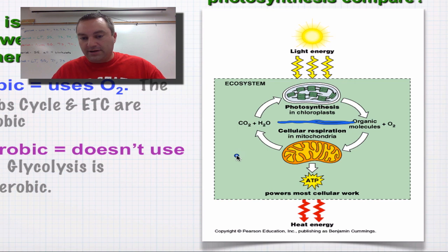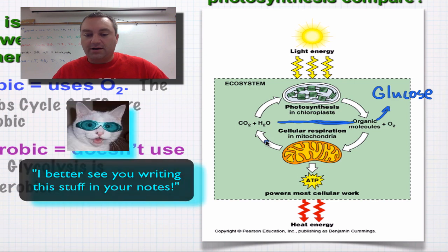All right. Now, what you want to remember is the products of one become the reactants of the other. So when we say organic molecules, as you can see here in this graphic, that refers to glucose, which is C6H12O6. So photosynthesis, the products are going to be glucose and oxygen, and those become the reactants for the mitochondrion to produce ATP down here, and the waste products, CO2 and H2O,